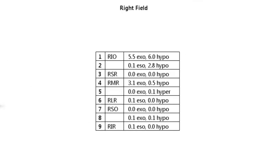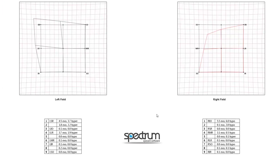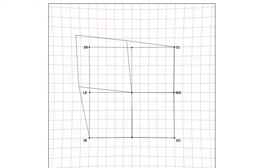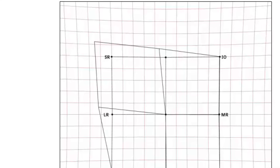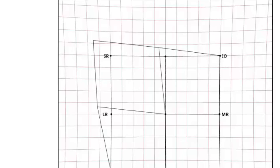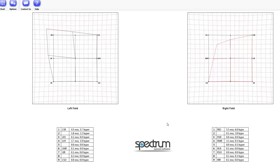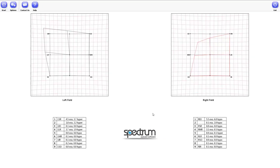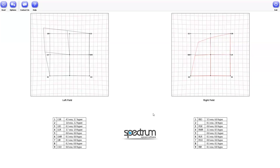As expected, according to Hering's law of equal innervation, there is an overaction of the left superior rectus, which is at point 1 on the left plot. By repeating this test on the patient over a period of time, it can be established if this apparent paresis is recent or of long standing. The magnitude of the overacting muscle slowly reduces with time.